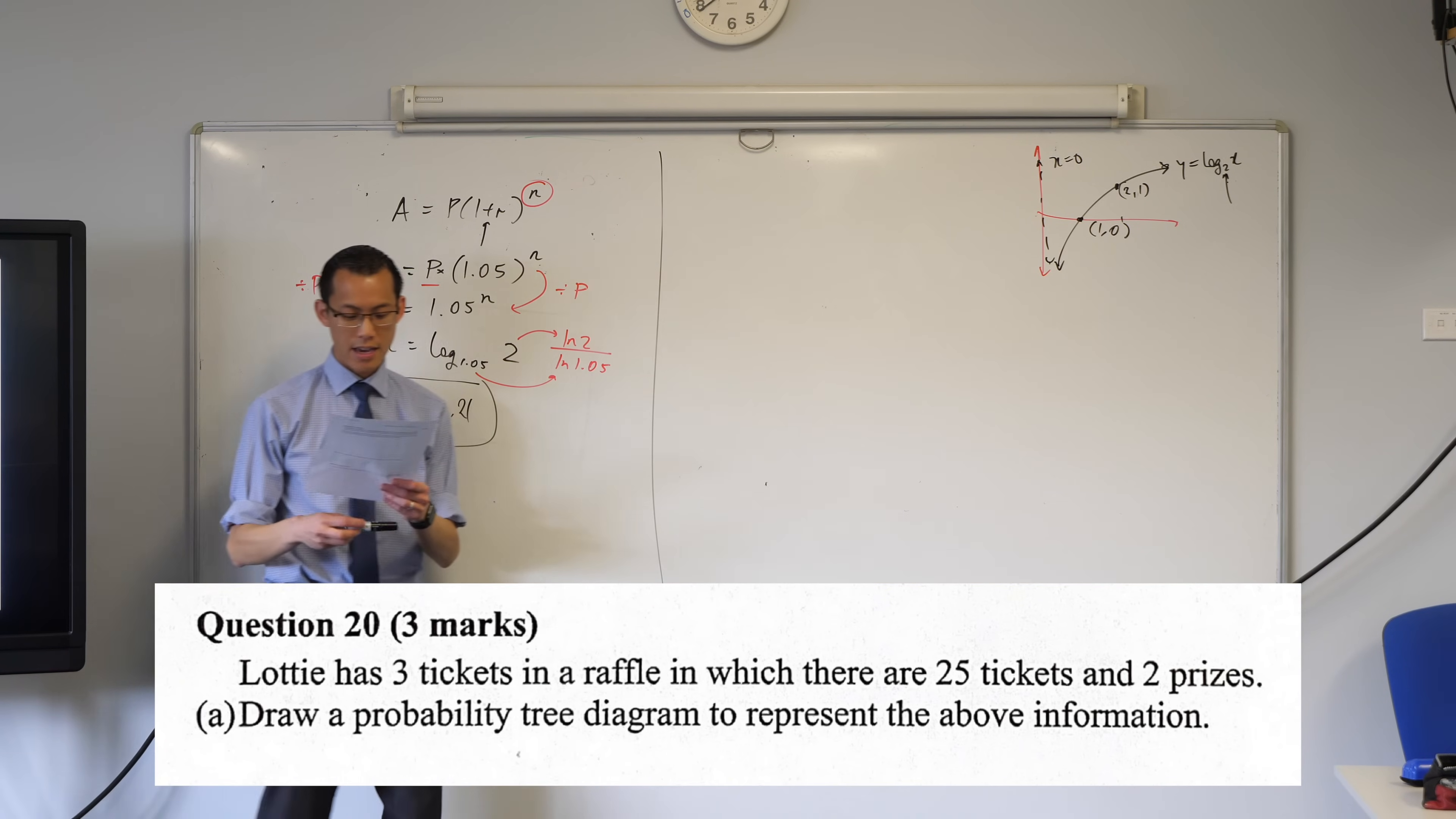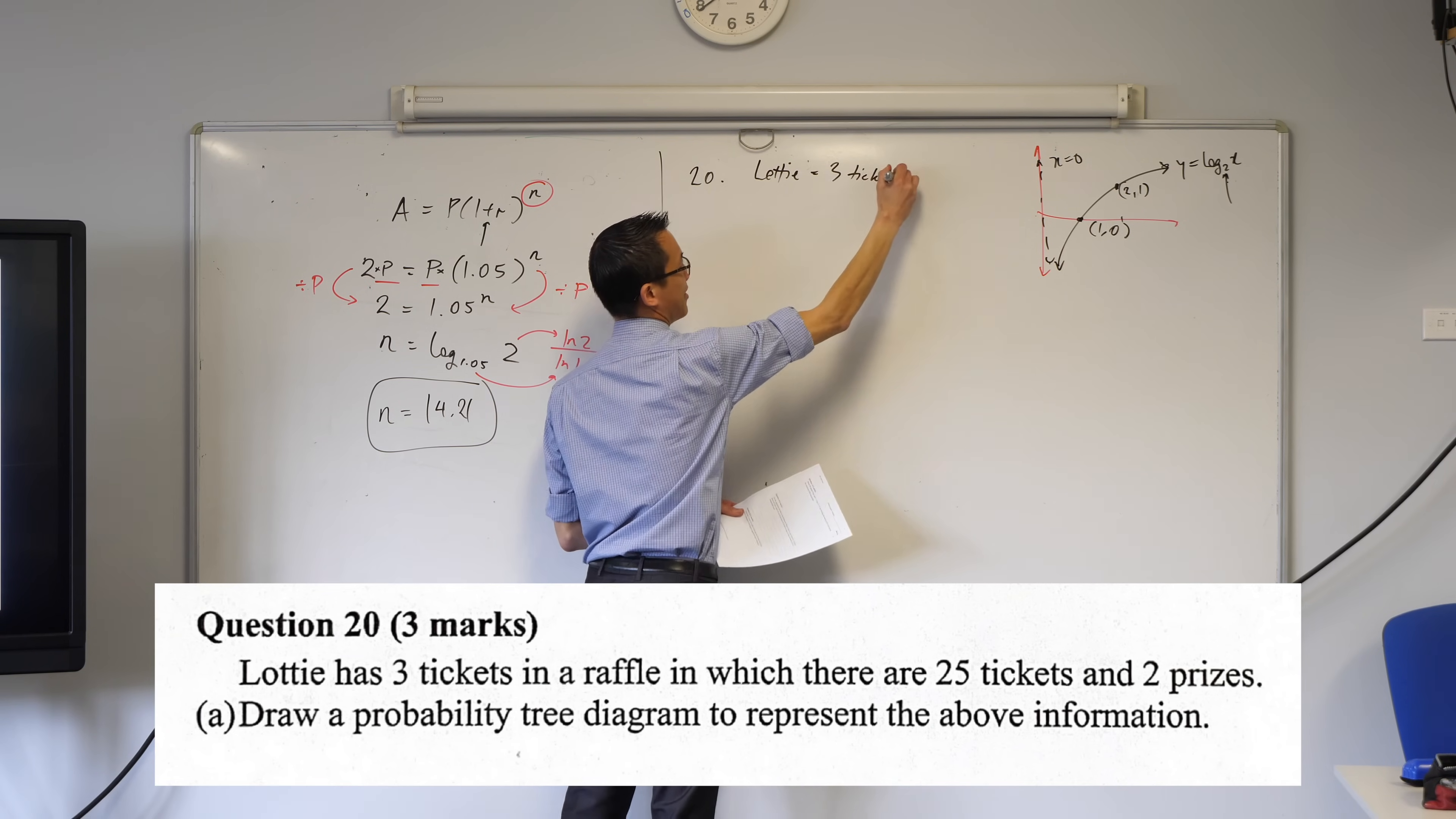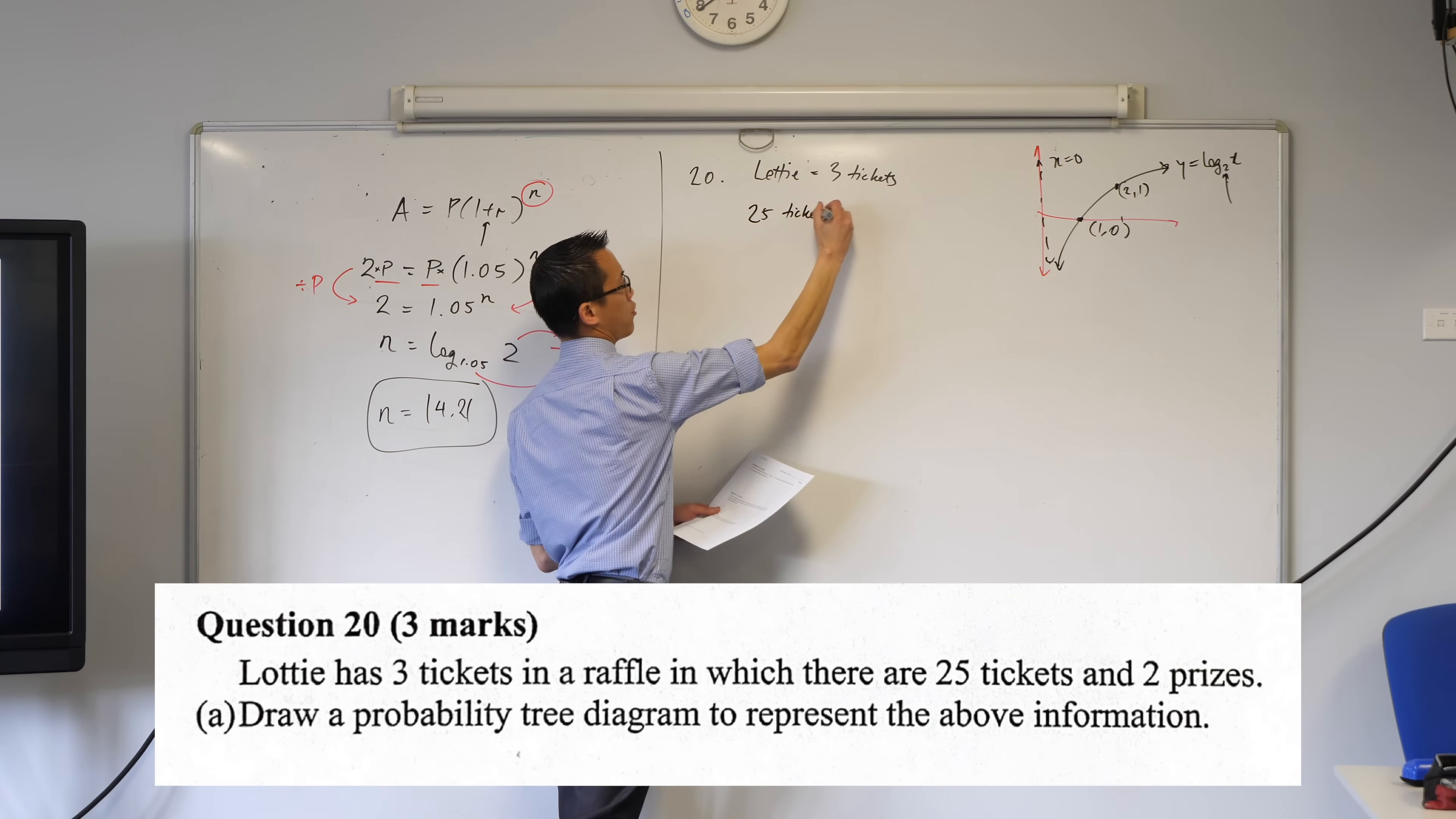Lottie has three tickets in a raffle, just going to jot that down. This is question 20. Lottie has three tickets. There are 25 tickets in total and two prizes. So, 25 tickets total.